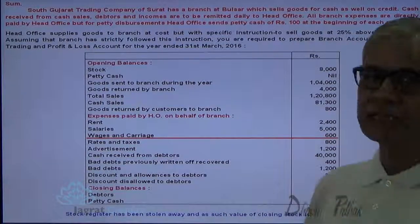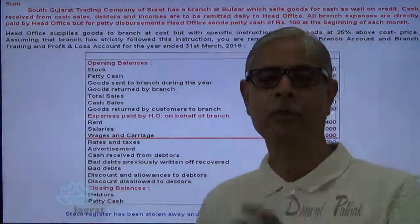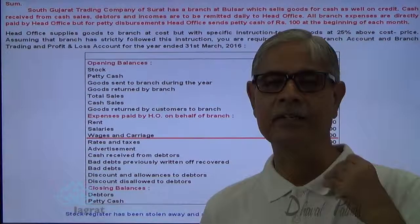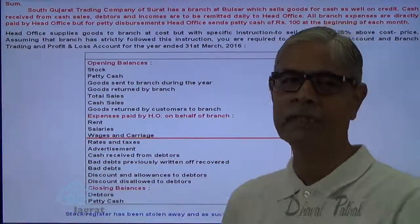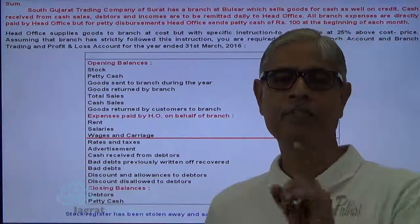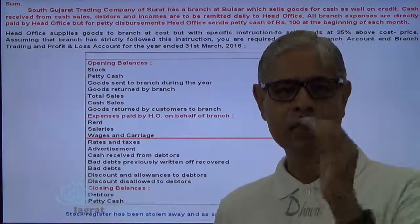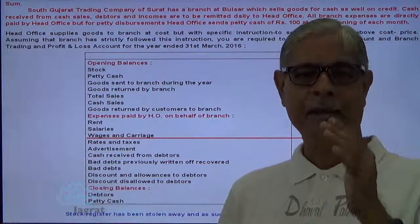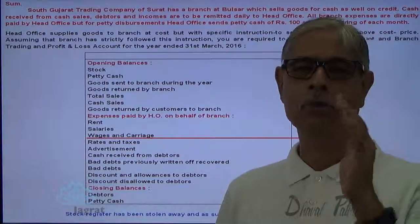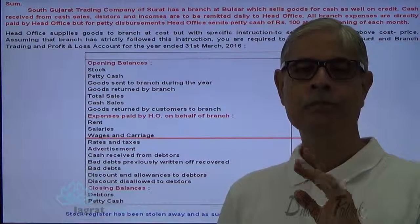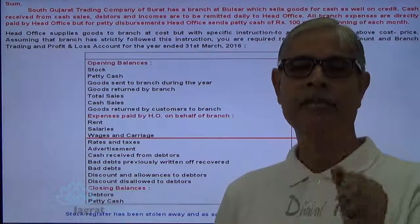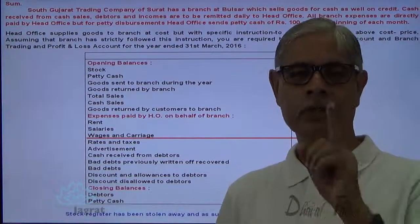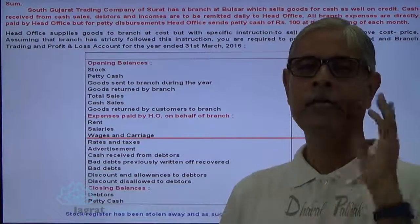Wages and carriage are given — these are items to be debited to the profit and loss account, so you should distinguish between the stock account and the trading account. If wages and carriage were not given, the stock account prepared to find the missing item and the trading account prepared to find gross profit would be the same. But since wages and carriage are given, the stock account and trading account will be different.